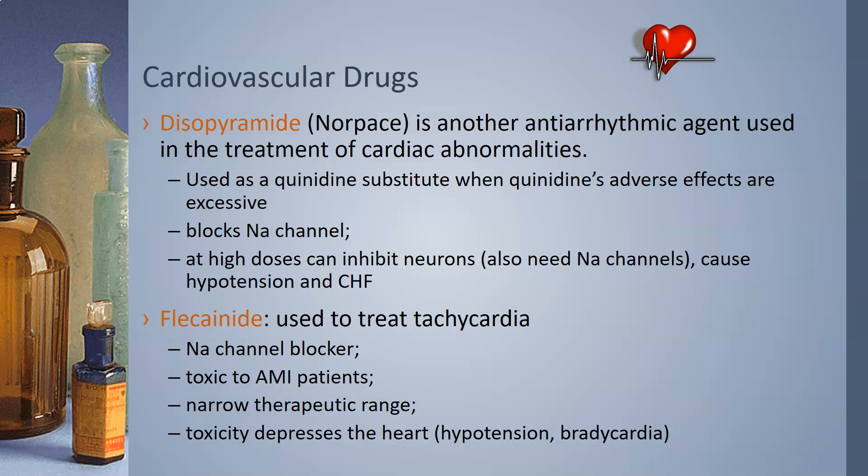Disopyramide, also known as Norpace, is another antiarrhythmic agent used in the treatment of cardiac abnormalities. It is used as a quinidine substitute when quinidine's adverse effects are excessive. It blocks sodium channels, and at high doses it can inhibit neurons — which also need sodium channels — and therefore can cause hypertension and congestive heart failure.